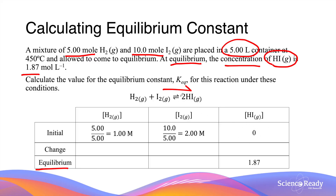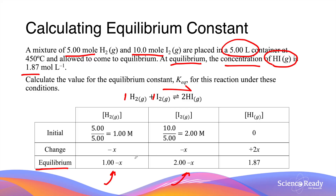Since there are no products at the beginning, only the forward reaction occurs, so the concentrations of the reactants will both decrease while the concentration of the product will increase. We denote this change using x. Because H2 and I2 react in a 1-to-1 ratio, they both decrease by −x. For every molecule of H2 and I2 that reacts, two molecules of HI are produced, so HI increases by +2x. The equilibrium concentrations of the two reactants are therefore expressed as (1 − x) and (2 − x) respectively.